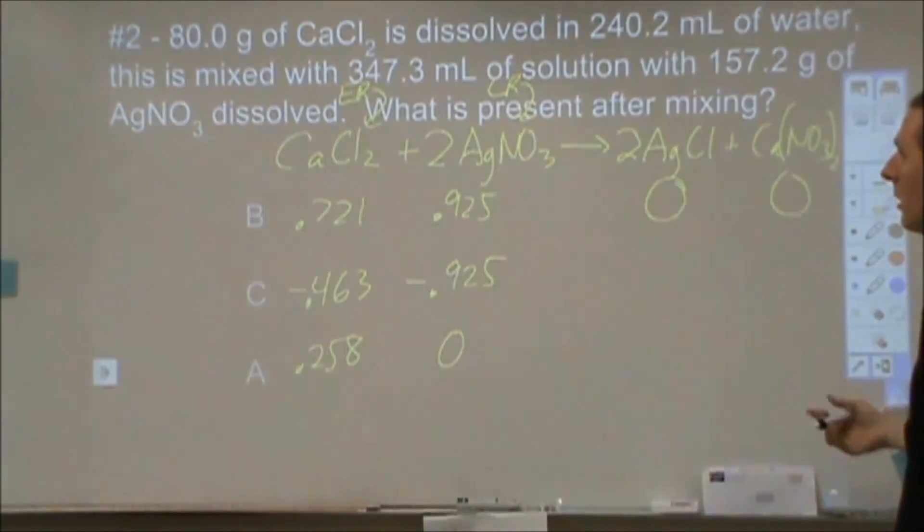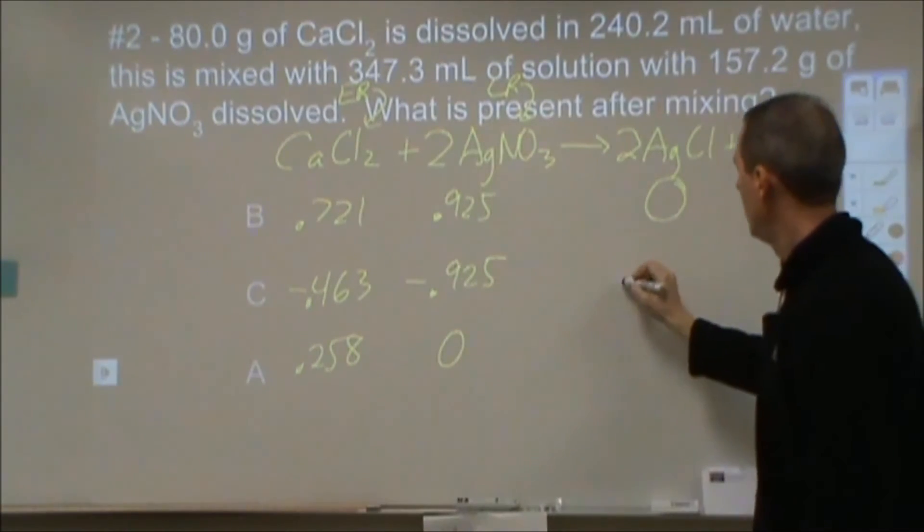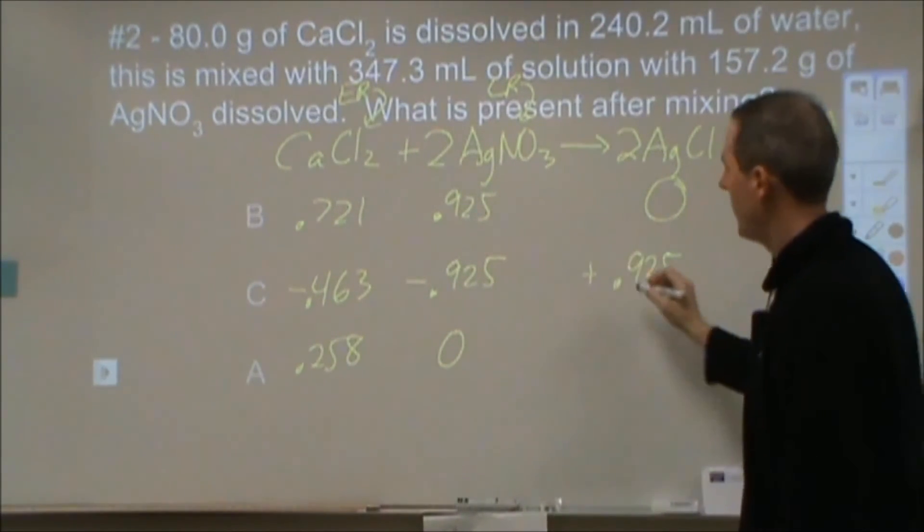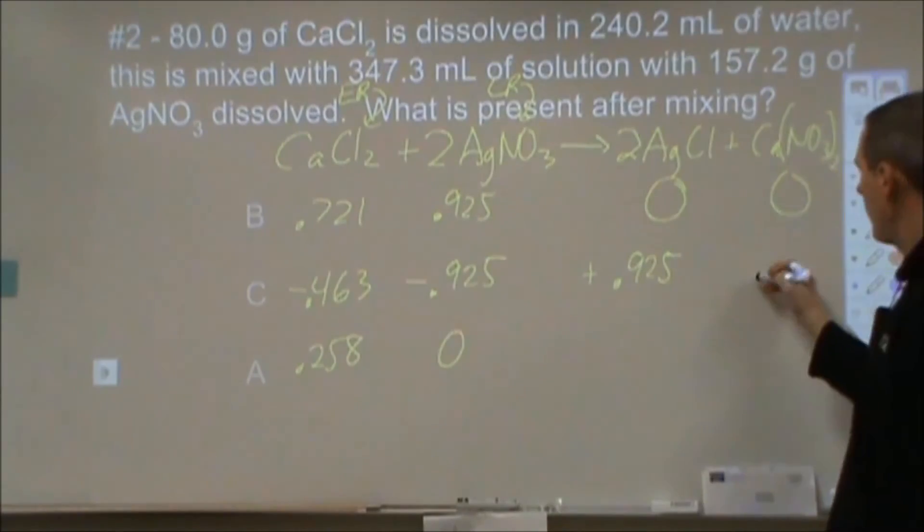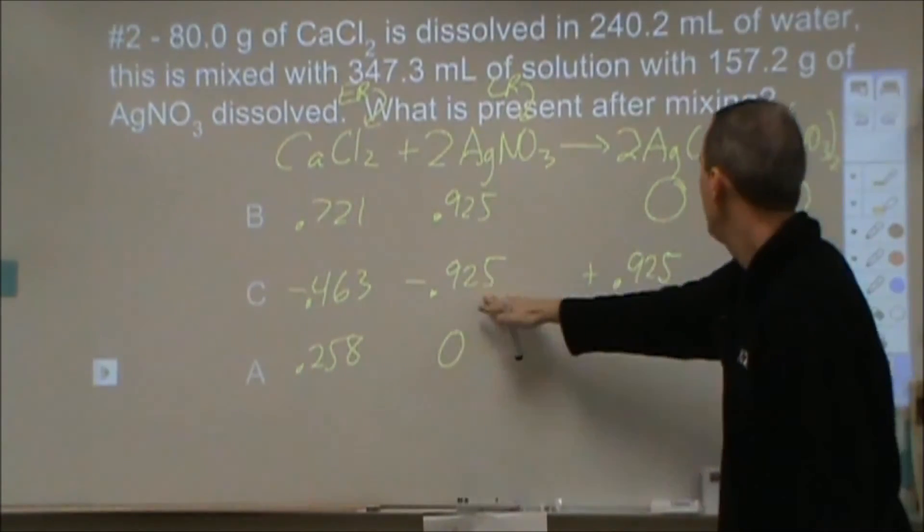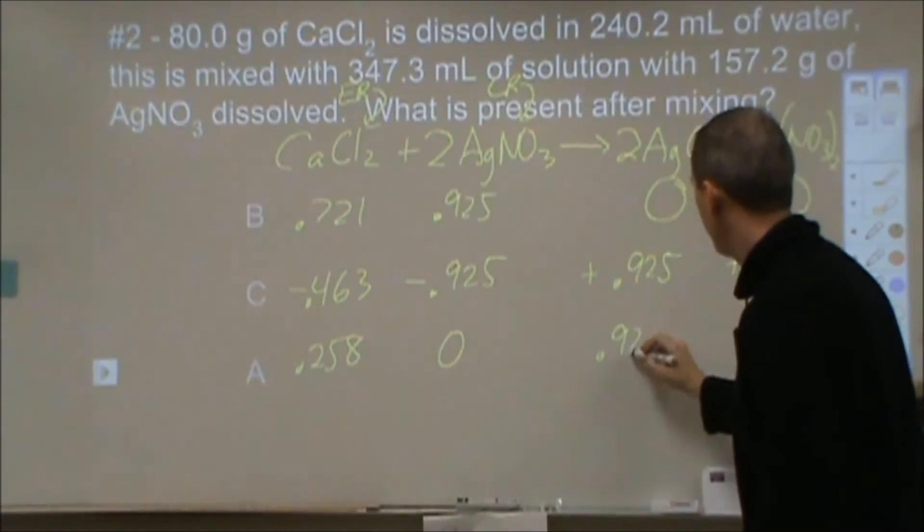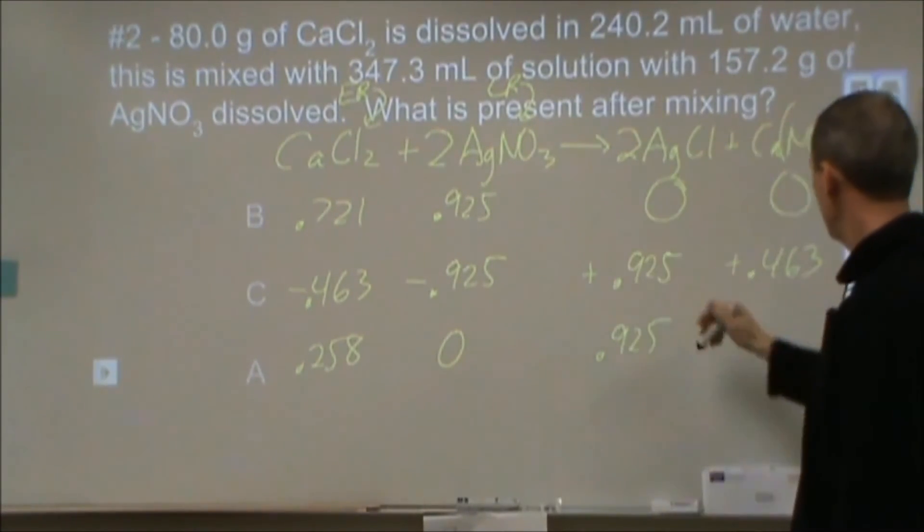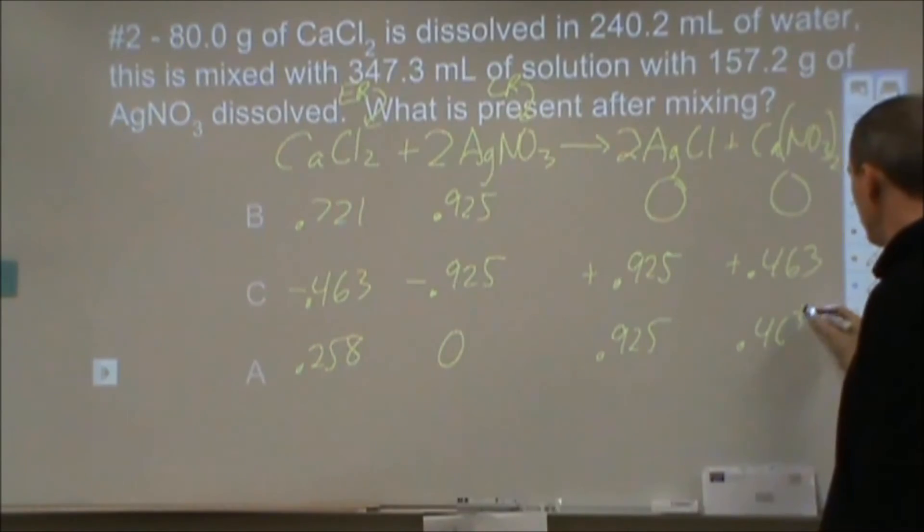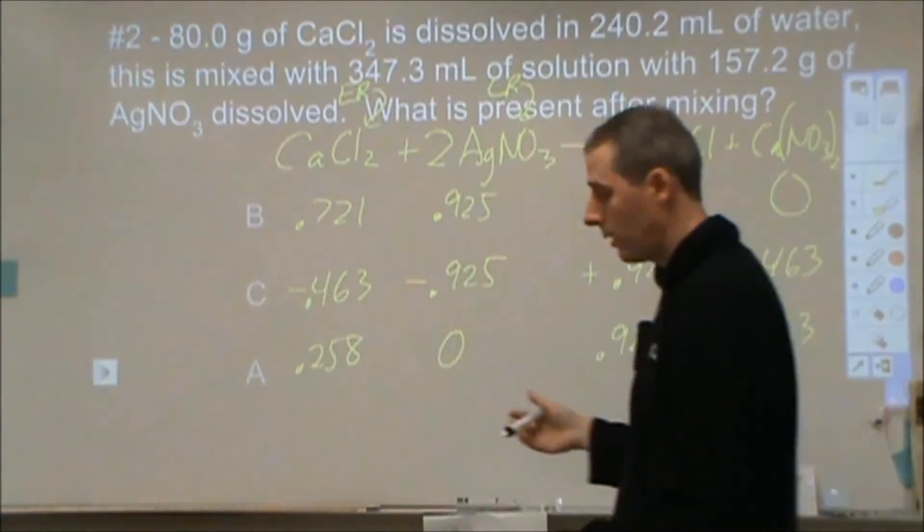Now we can look at what's going to happen here. So for the silver nitrate, every one of those makes a silver chloride. So we're going to end up gaining 0.925 of that. And then our calcium chloride we can use for our other value here, 0.463. Of course, we can also go through and do the half. That would work as well. At the end of the day, we will have 0.925 moles of this, 0.463 moles of calcium nitrate. And we'll have 0.258 moles of calcium chloride left over.